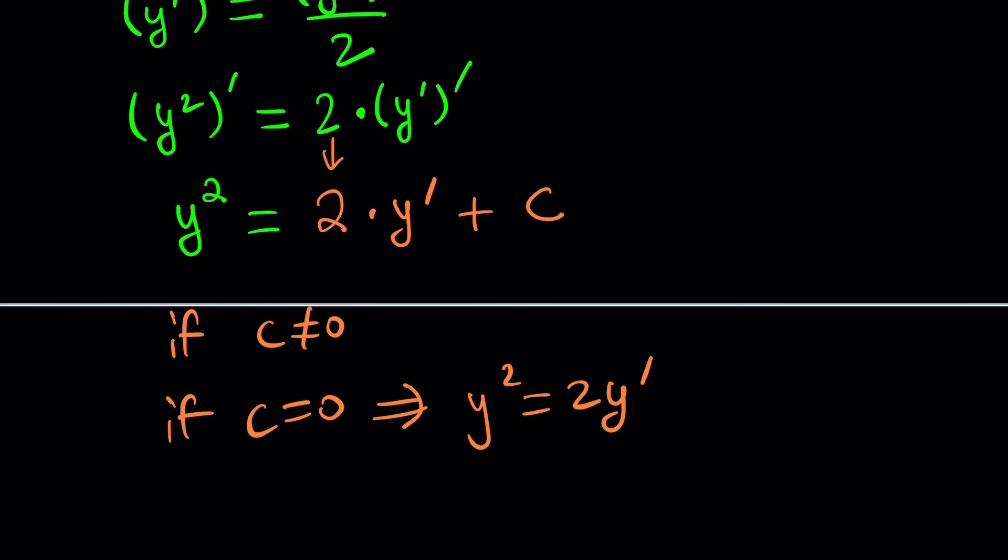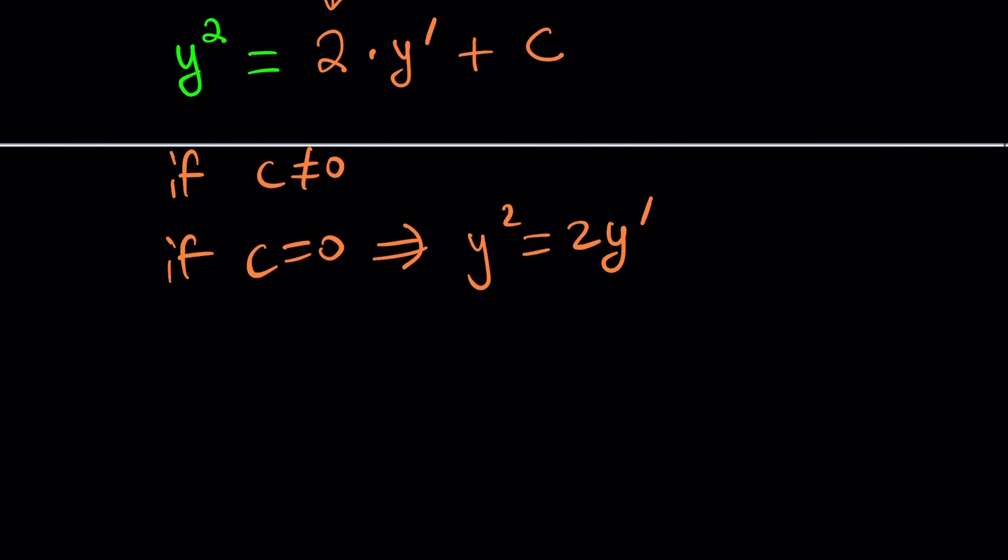If c is equal to 0 then we're in good shape because we get y squared equals 2 times y prime. And guess what? This can be easily solved. You know why? Because it's separable. Let's take a look. So now we can go ahead and write the y prime as dy over dx which is what it is, the derivative of y with respect to x.